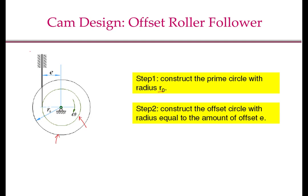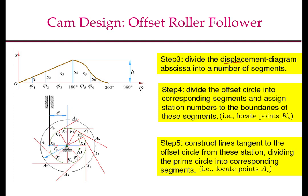We again assume that the follower will be moving vertically upwards, so at theta equal to 0, this is the position of the follower. As before, we divide the displacement diagram x-axis into a number of segments, which may be equal or unequal. Then we need to divide the offset circle into the corresponding segments — note it is the offset circle, not the prime circle. We start with initial position K0, then take angle phi 1 and mark K1, phi 2 for K2, phi 3 for K3, and so on until K8.